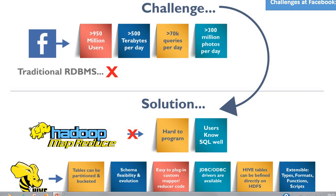Facebook needed a scalable and economical solution to cope with this problem, and therefore they started using the Hadoop framework. Facebook had greater than 950 million users, generated greater than 500 terabytes of data per day, processed greater than 70,000 queries per day, and handled greater than 300 million photos per day — which was not manageable for traditional RDBMS. That is why they adopted Hadoop MapReduce along with Apache Hive.